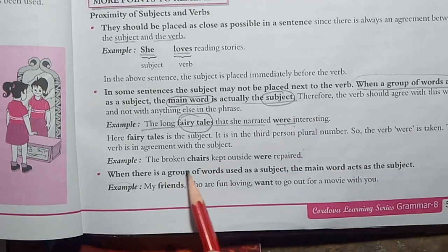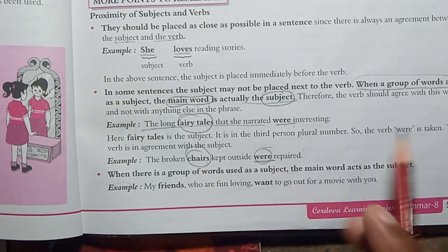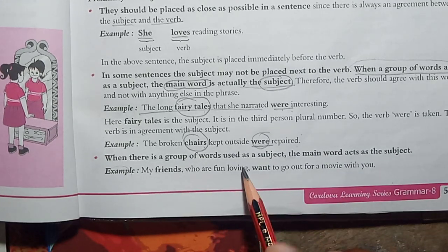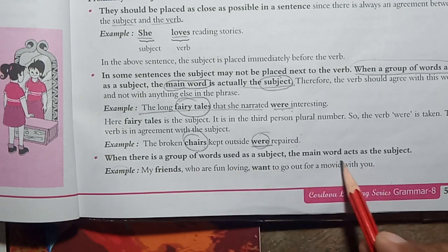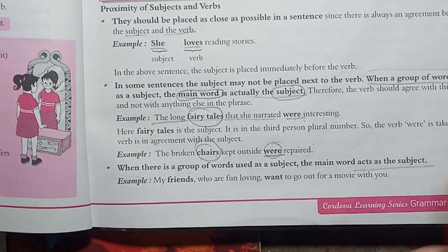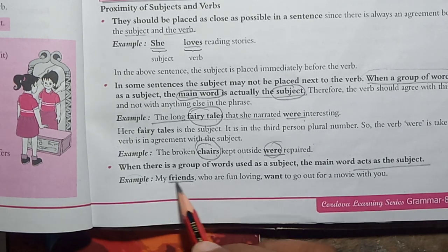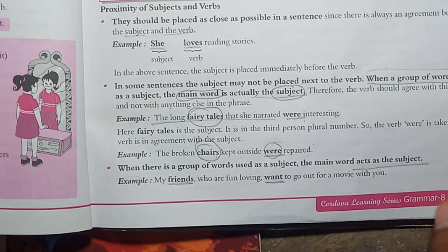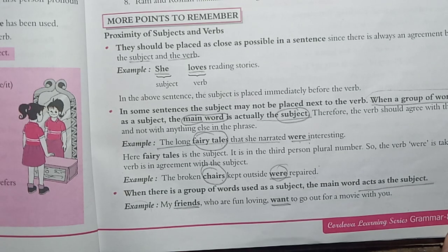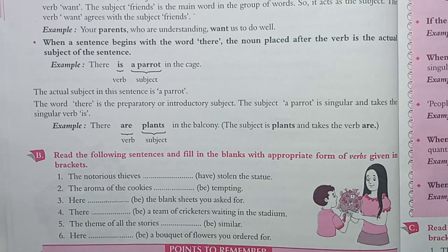'The broken chairs kept outside were...' — 'chairs' is plural, so use a plural verb. When there is a group of words used as subject, the main word acts as the subject. For example: 'My friends who are fun-loving want to go out for a movie with you.' The subject is 'friends', which is plural, so we use a plural verb. You need to find the head/main word and use the verb according to it.